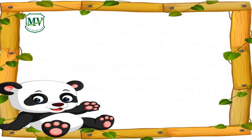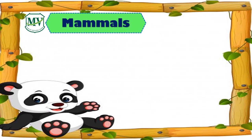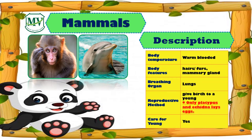Vertebrates are divided into five groups. First, we have the mammals. Mammals are animals that are warm-blooded, like monkey and dolphin. They have hair, fur, and mammary glands. And they breathe using their lungs.